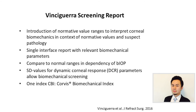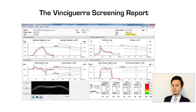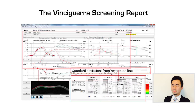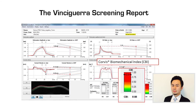Similar to the BAD, the Vinciguerra Screening Report is a screening tool for the biomechanical properties of the cornea. It uses different corneal dynamic response parameters and generates a single index called the CBI — the Corvis Biomechanical Index. This is the Vinciguerra Screening Report, showing the normal ranges of different corneal dynamic response parameters. The CBI is shown here, along with the different parameters incorporated into its calculation, such as the DA ratio, HC radius, ARTh, and the stiffness parameter.